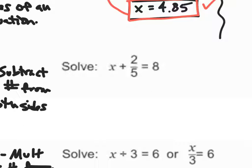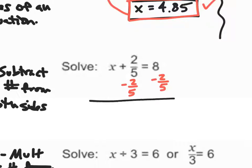Let's solve this equation: x plus 2 fifths is equal to 8. Same approach — x plus 2 fifths is equal to 8. If I'm adding 2 fifths, the opposite of adding 2 fifths would be subtracting 2 fifths from both sides. So I get x is equal to 8 over 1 minus 2 fifths.